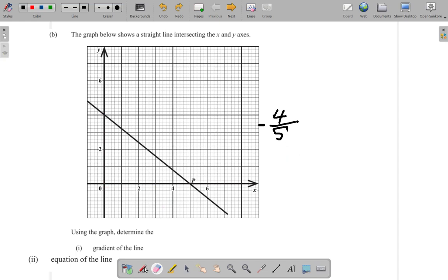We found the gradient as negative four-fifths. Now, we want the equation of the line.